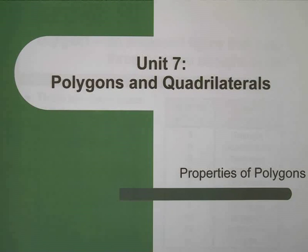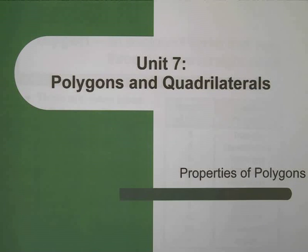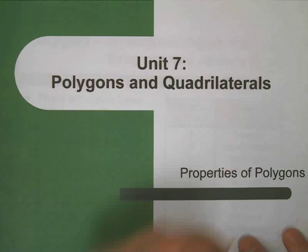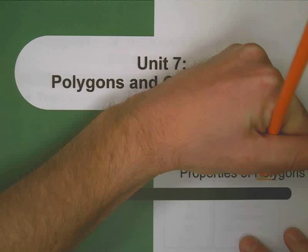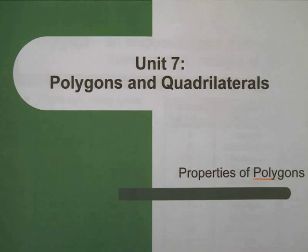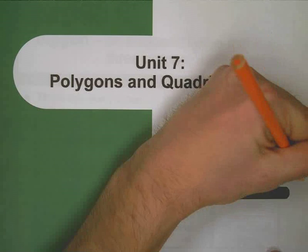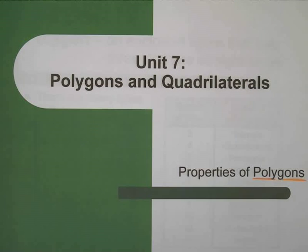Hi, this is the first of the Day 1 notes for our Unit 7, which is on polygons and quadrilaterals. Today we're going to be talking about the properties of polygons. Before we get going, it might be helpful to know what that word means. We've talked about it before, and we'll just rehash it again real quick. The prefix poly just means many, and gons refers to faces — so we have many faces, or basically many-sided shapes.